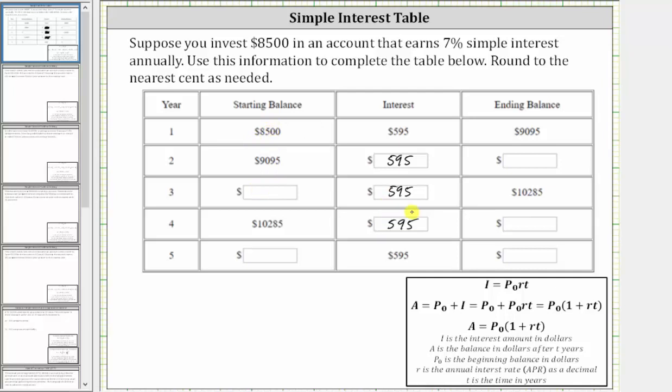But let's check to make sure the $595 is correct by using the simple interest formula, I equals P sub zero times R times T, where I is the interest amount in dollars, P sub zero is the beginning balance in dollars, R is the annual interest rate as a decimal, and T is time in years.